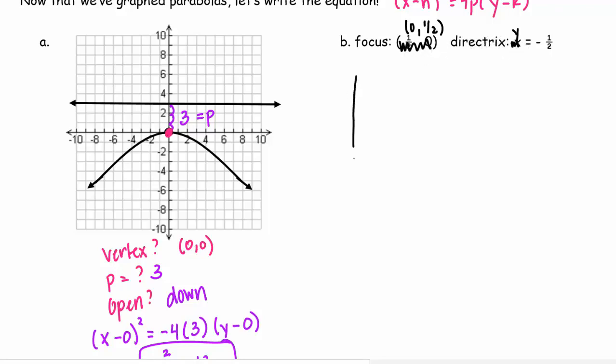So I'm going to graph this. My focus is at (1/2, 0), 1/2, and my directrix is y = -1/2. But again, just like the last one, I need the vertex. I need p. I need to know which way it opens.